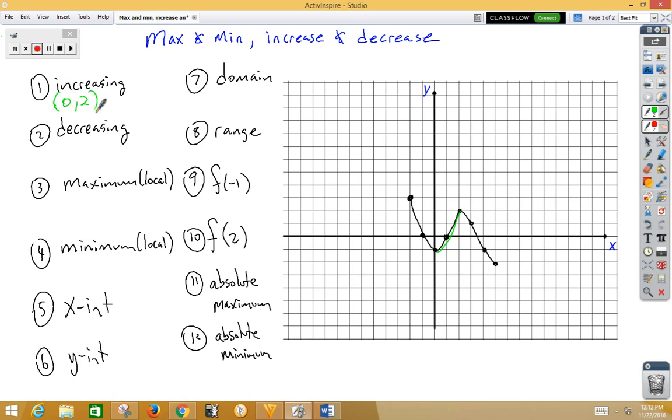This graph appears to be decreasing here where I'm marking red. The x values for the first interval appear to be negative 2 to 0, and on our second interval from 2 to 5.